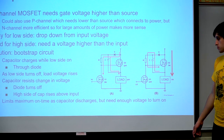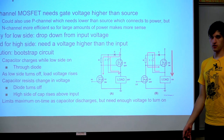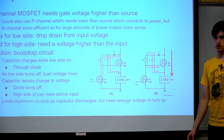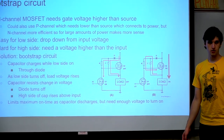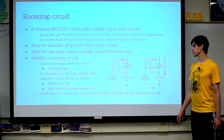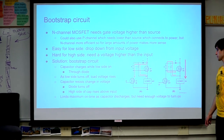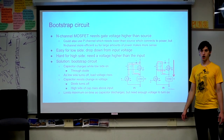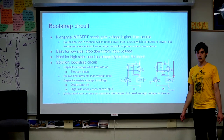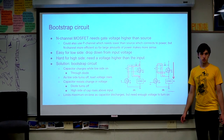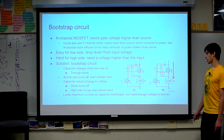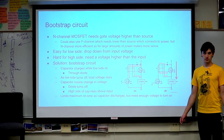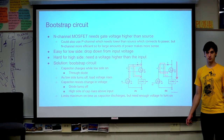One consequence of the bootstrap circuit is that in theory you could keep the high side MOSFET on forever, but in reality the capacitor slowly discharges. So eventually you have to turn the high side off and the low side back on — even if only briefly — so the bootstrap capacitor can recharge. Typically that's about 99.9% of the time on, so for most purposes it doesn't really matter.